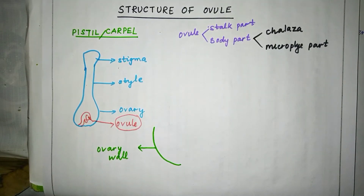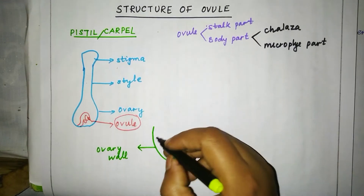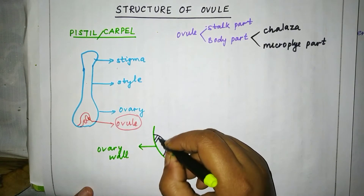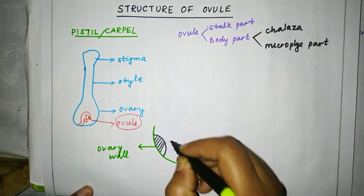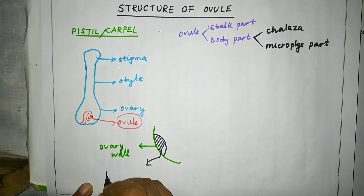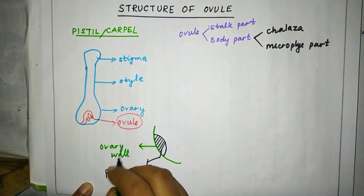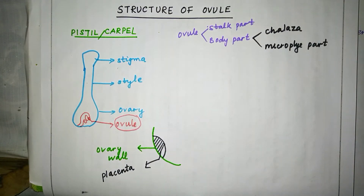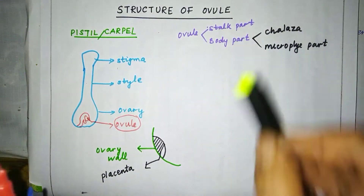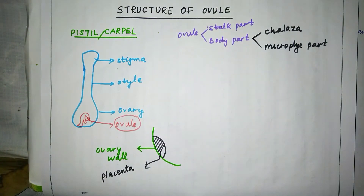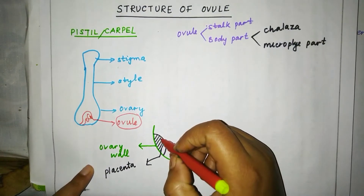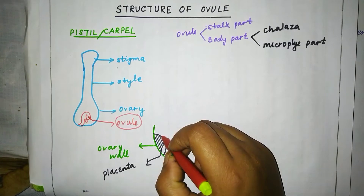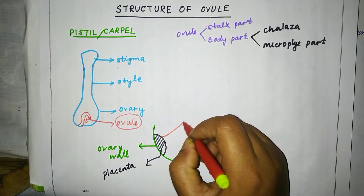The wall shown here is the ovary wall. The tissue to which the ovule is attached is known as placenta. The placenta is attached to the ovary wall. The arrangement of placenta in the ovary is known as placentation. As we know, the ovule has two parts: the stock part and the body part, and the ovule is attached to the placenta.